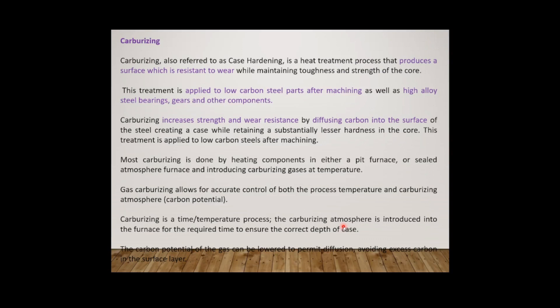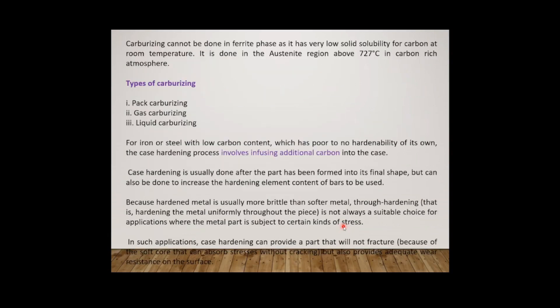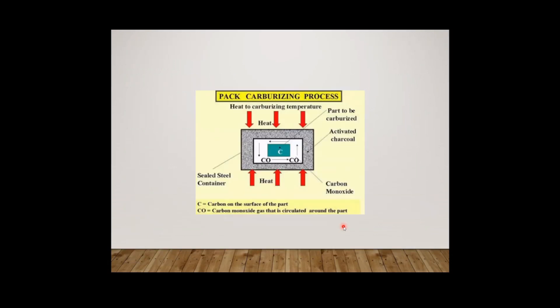First we are going to see the first type of carburizing, that is pack carburizing. This is the diagram for pack carburizing. In pack carburizing, a pit furnace is used for this type of process.